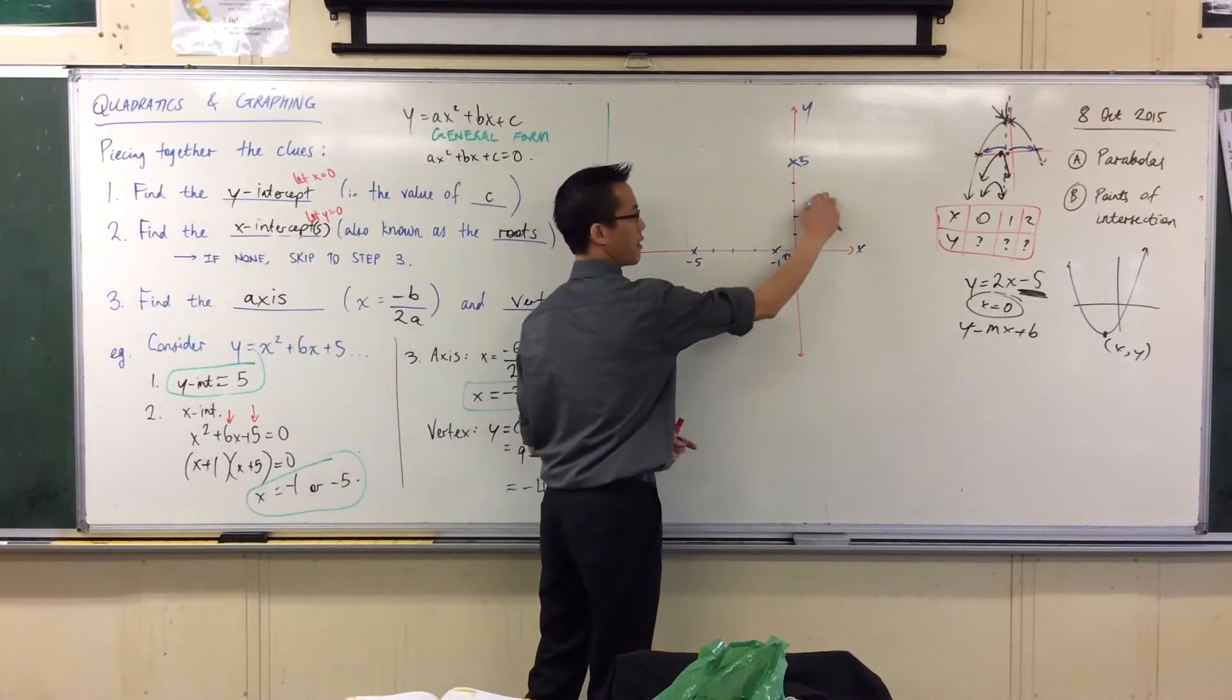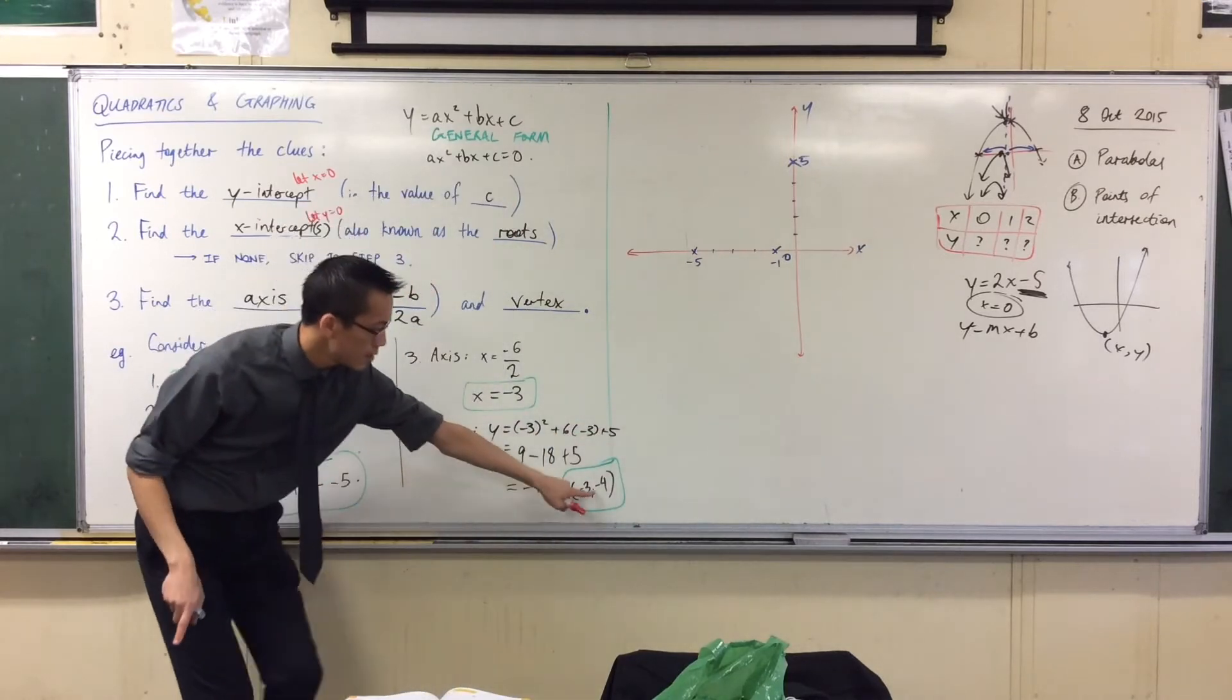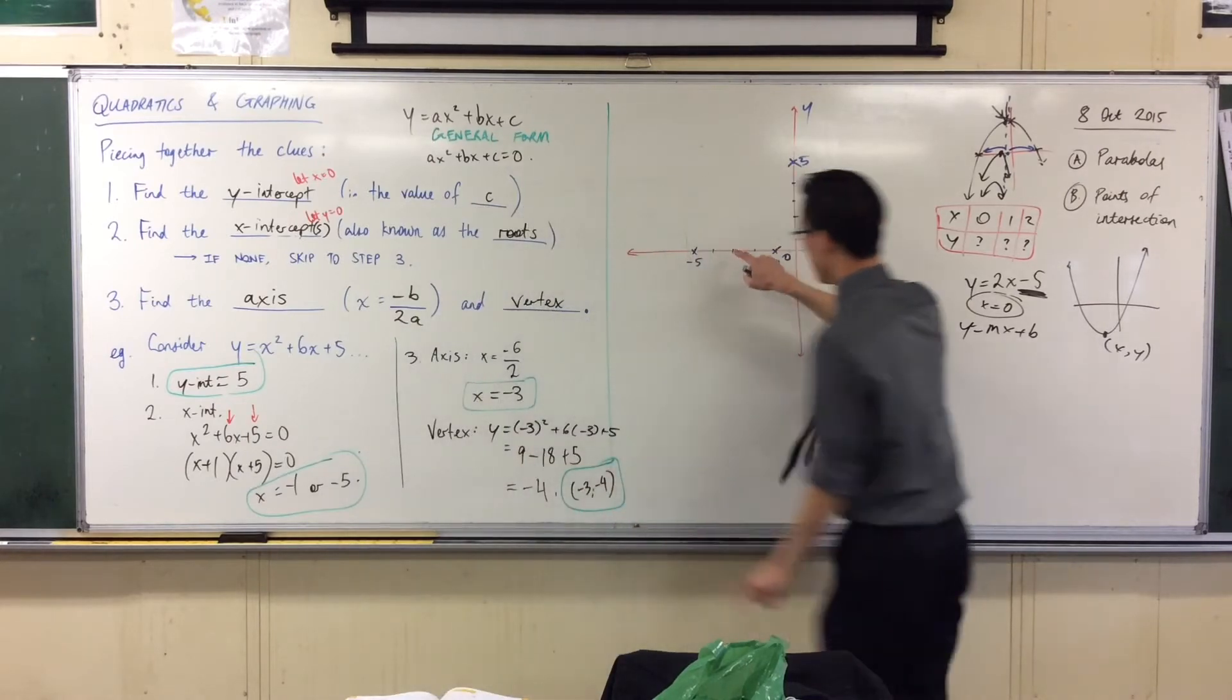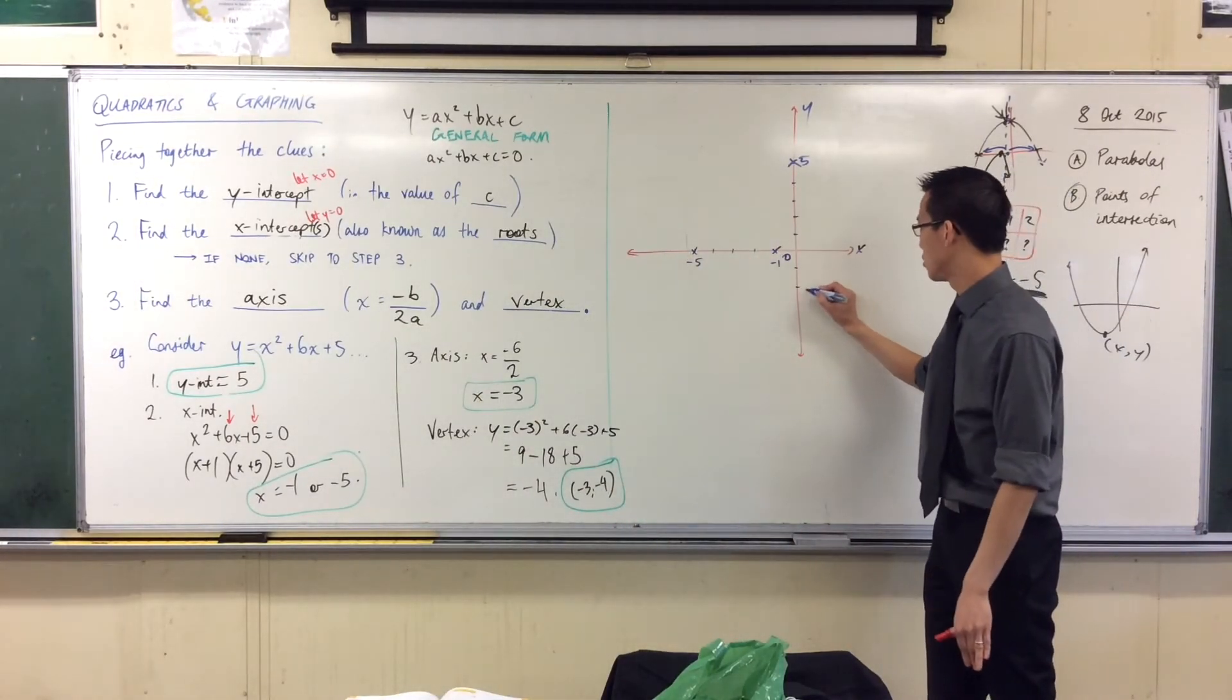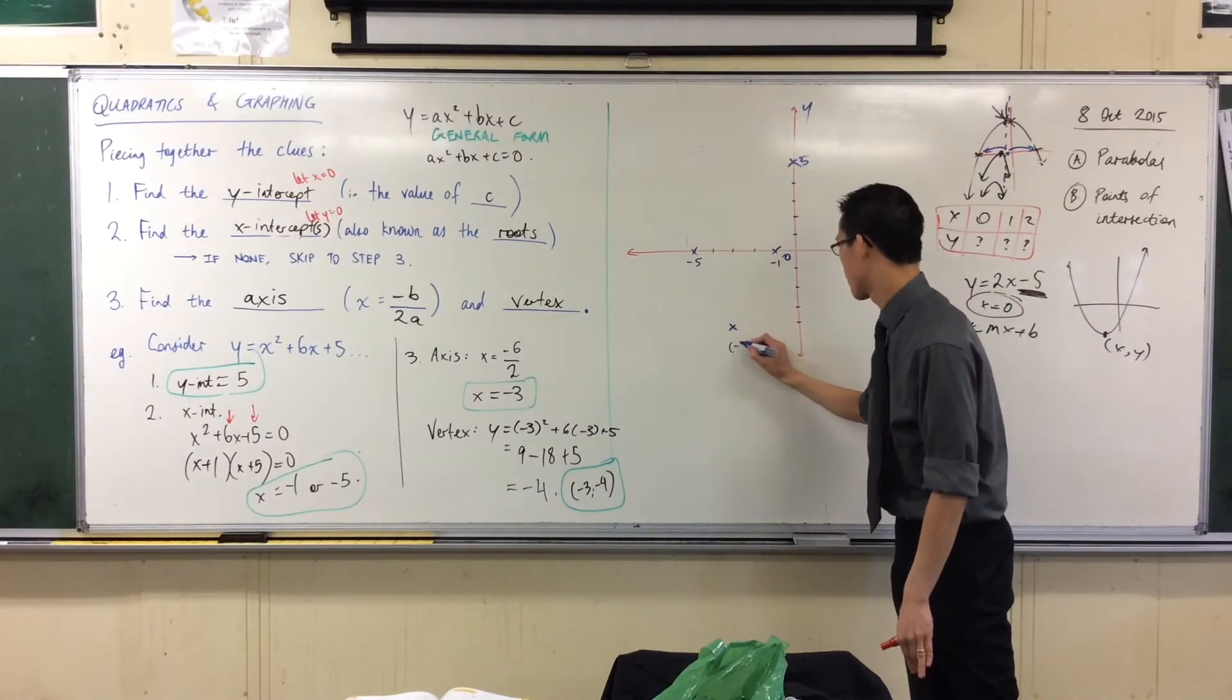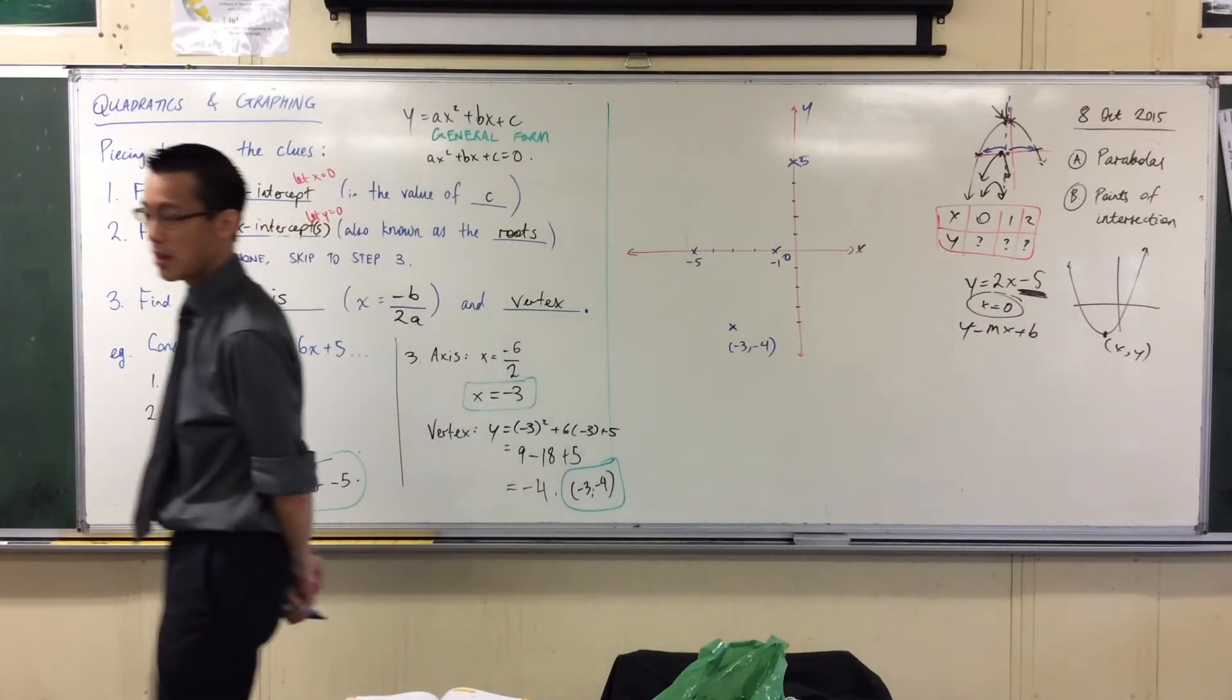So, if this is 1, 2, 3, 4, 5, for instance, when I put this number down here, see this? This is negative 4, or I should say negative 3, negative 4. So, here's negative 3 horizontally, and I'm going to go down 1, 2, 3, 4. That's where my vertex is. Are you happy with that?